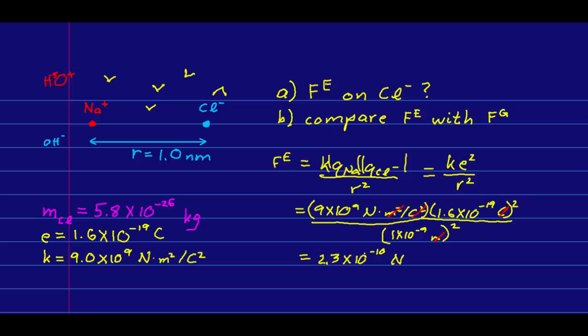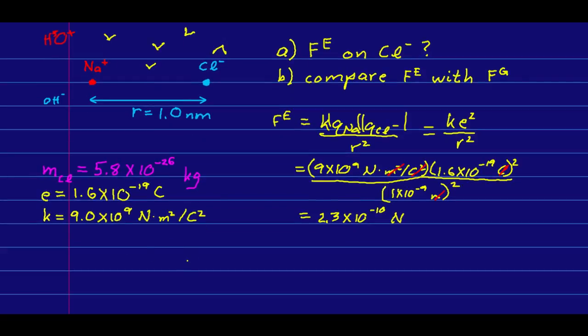And we get an answer of order 10 to the negative 10 newtons. Now, that seems like a very small force. Let's now calculate the gravitational force on this chloride ion. Well, that's easy. That's just mg. And the mass of a chloride ion is this. And so that is just going to be, g is basically 10. And so this is 5.8 times 10 to the negative 25 newtons. So note that the electrical force on this chloride ion is about 15 orders of magnitude larger than the gravitational force on the chloride ion.